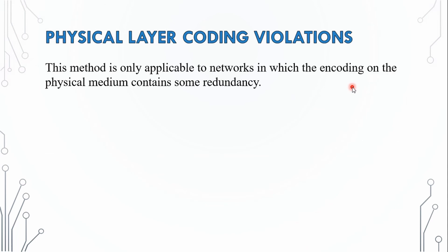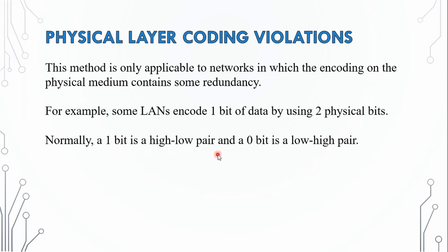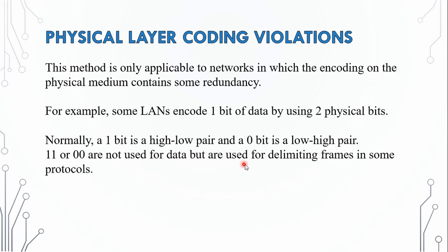Physical layer coding violations: this method is only applicable to networks in which the encoding on the physical medium contains redundancy. For example, some LANs encode one bit of data using two physical bits — this is Manchester encoding, where a one bit is a high-low pair and a zero bit is a low-high pair. The combinations high-high and low-low are not used for data, but are used for delimiting frames in some protocols.